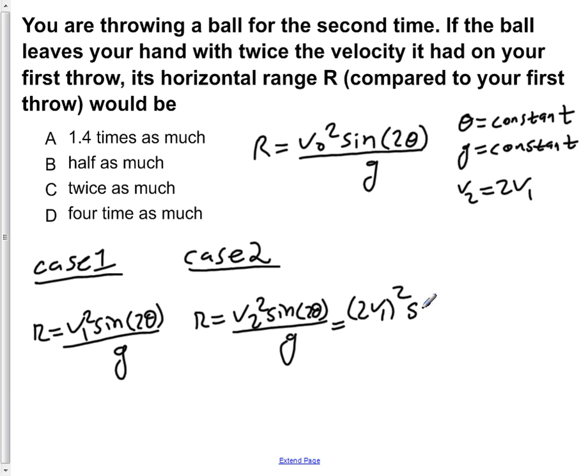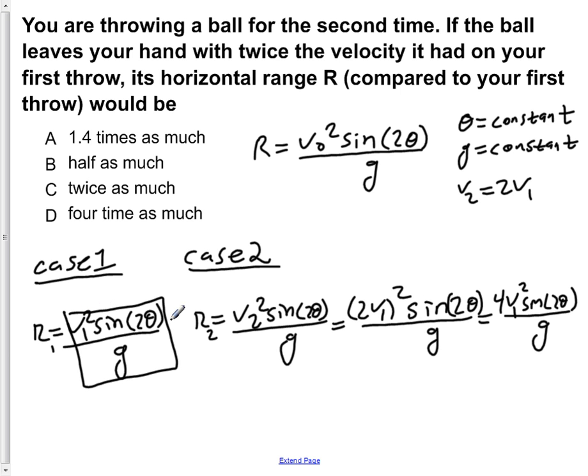You square that entire thing, times the sine of 2θ, all over g. We see that R₁ is equal to V₁² sin(2θ) over g, and we see that we have that value in the value of R₂. So we can plug in R₁ into this equation and we would find R₂ is equal to 4 times R₁.